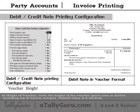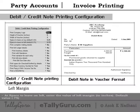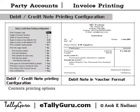For voucher width, enter the width of the voucher print area in inches including left and right margin; the default value is five inches. For left margin, enter the value of the top margin in inches; the default value is 0.25 inches. This section contains printing options.